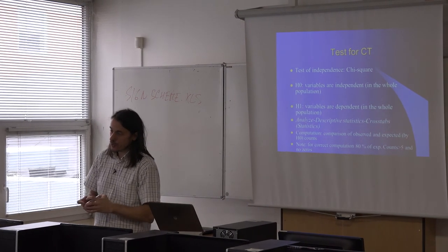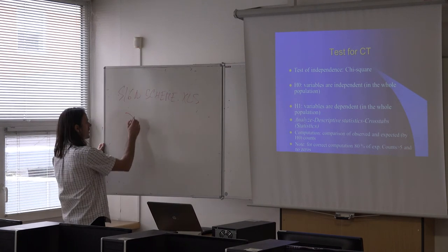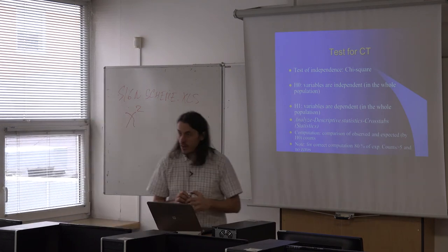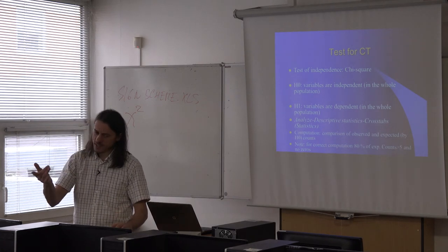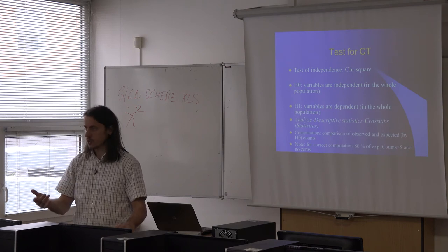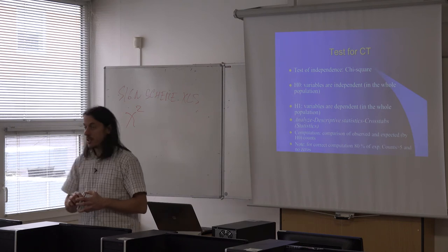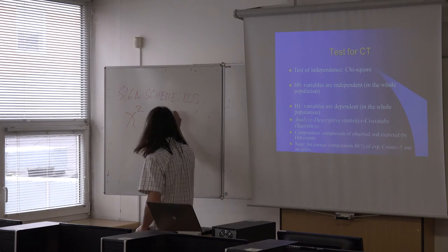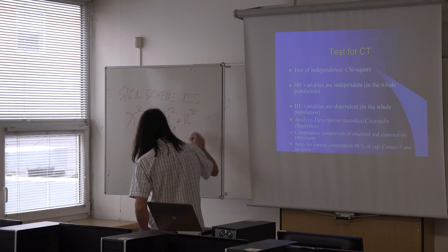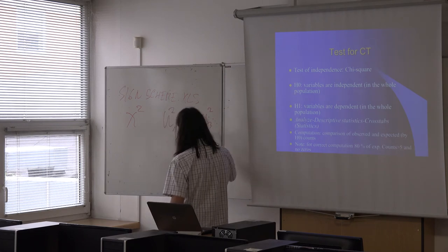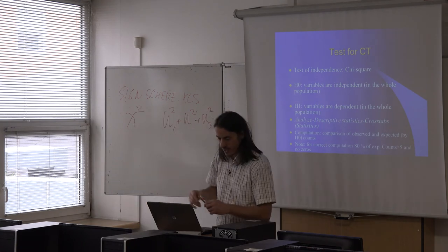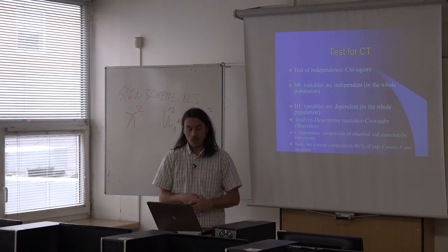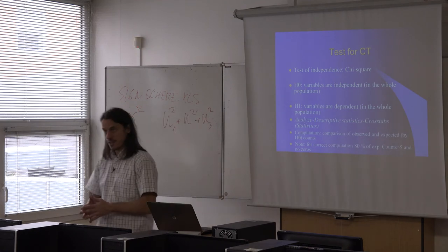Chi (χ) is a letter from the Greek alphabet — it is written similarly to x. Chi-squared is a theoretical distribution, like the normal distribution, t-distribution, and F-distribution we discussed previously. Theoretically, chi-squared arises when you take normally distributed variables, square them, and sum several of them. SPSS handles this computation, so we don't need to go into detail. What we need to know is the hypotheses and how to evaluate the test.